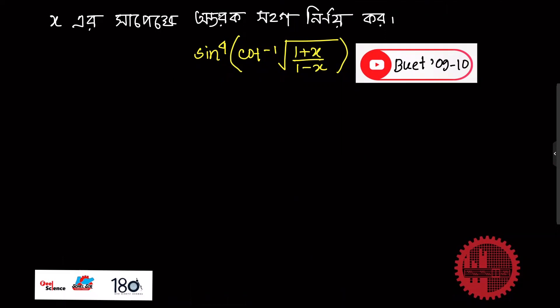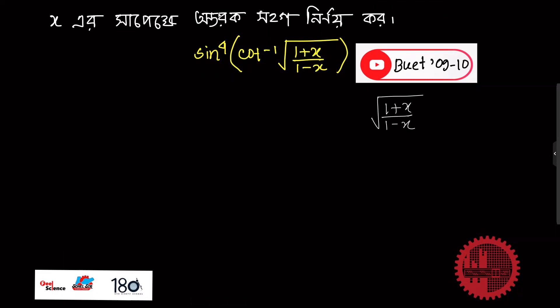If you don't know this one, you can see the inverse trigonometry function. We let x equals cos theta. So y equals sin to the power 4 of cot inverse of root over (1 plus x) divided by (1 minus x).